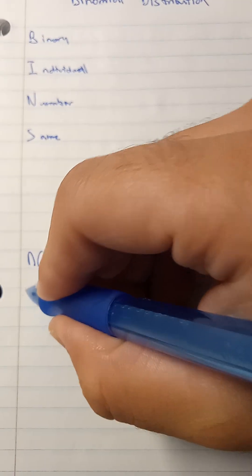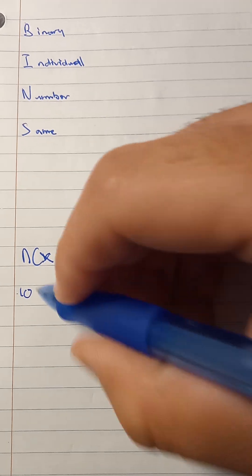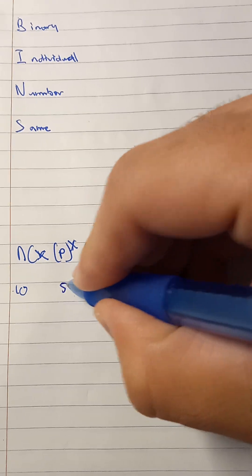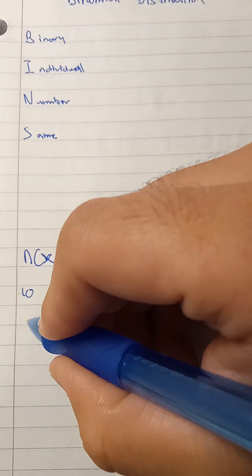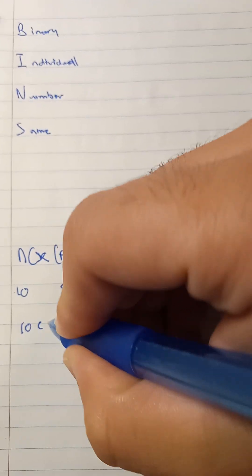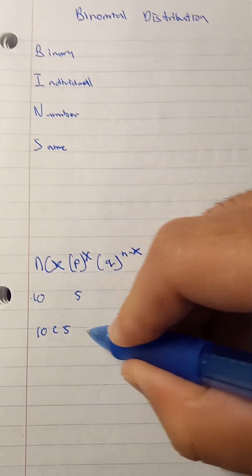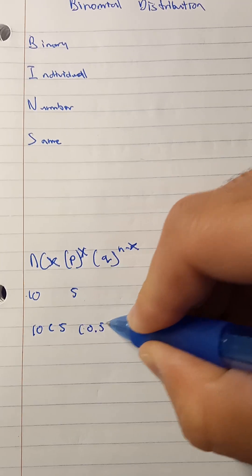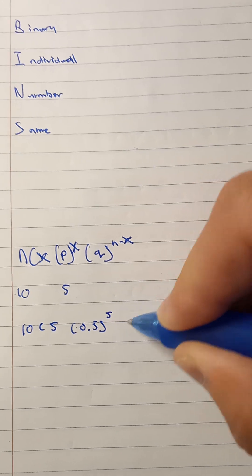Say for example, you want to do 10 trials, 10 coin flips, and you want 5 of them to succeed. So what would that be? That would be 10 choose 5, 0.5 for 50-50 to the 5th